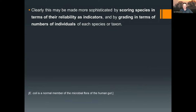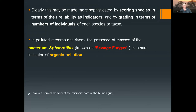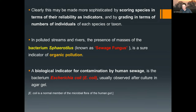For lots of taxa you can get to the broad group quite easily — does it have two tails or three? Is it a mayfly? Has it got a caddis shell or not? Getting beyond that to the actual species can be quite tricky without practice, but it is doable. In polluted streams and rivers, the presence of masses of the bacterium Sphaerotilus — known as sewage fungus — is a clear indicator of organic pollution. The biological indicator for contamination by human sewage is the bacterium Escherichia coli, usually observed after culture, and it is very specific for human sewage pollution.